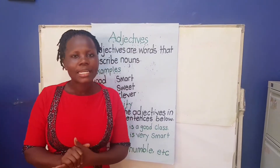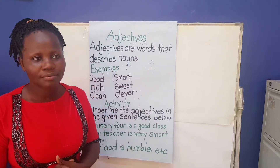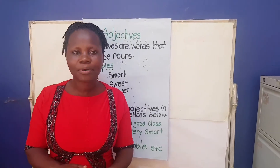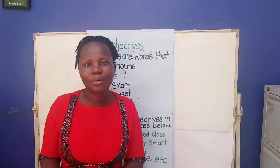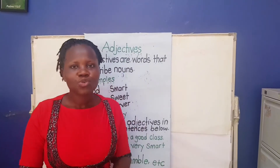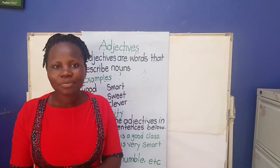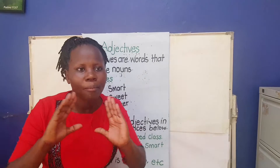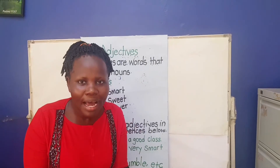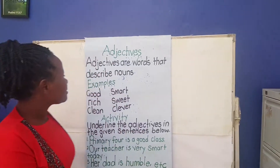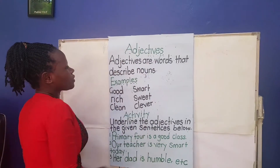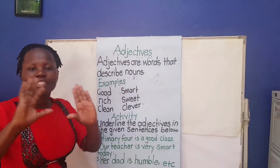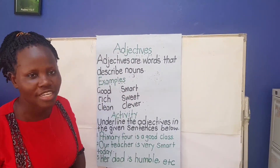Remember, a noun is a naming word. For example, dream is a noun, school is a noun, boy is a noun, Kampala is a noun. So these adjectives are words that are used to describe the words that I've just mentioned right now.